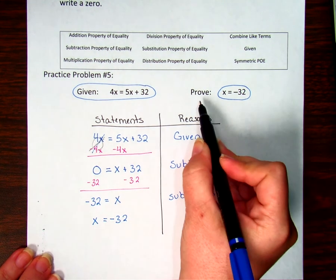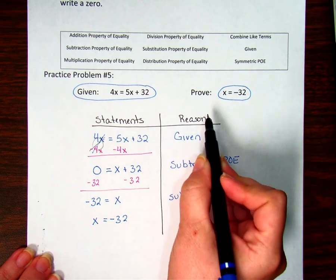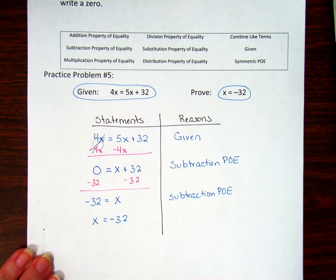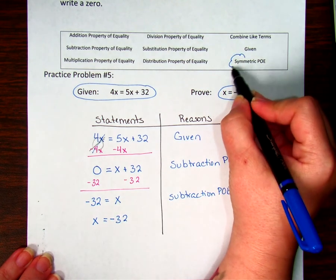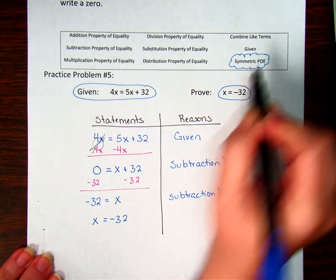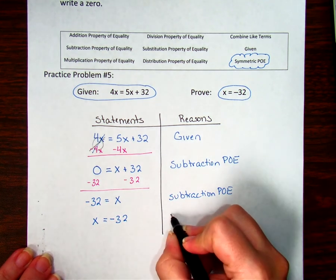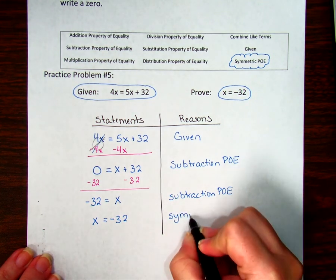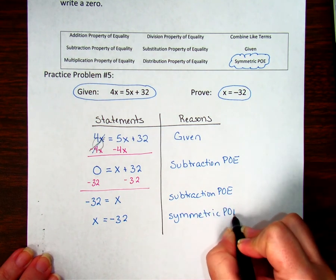But I have to have something written here. And I know it's tempting to say prove because I write given for my given. But remember, we never ever put the word prove. So what did I do? I used the new property, my symmetric property of equality.